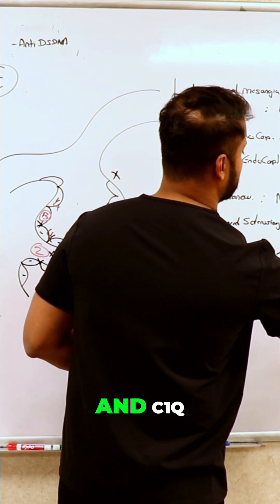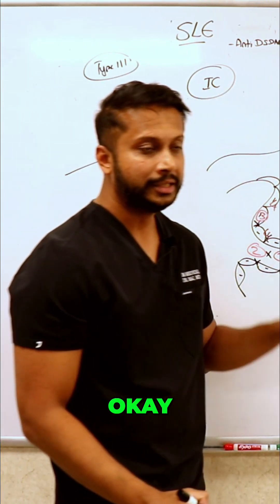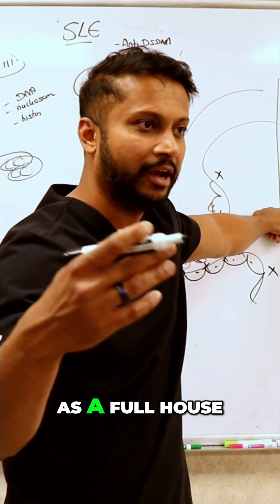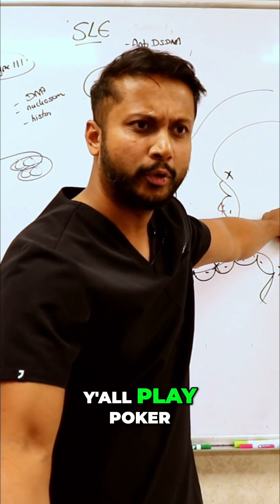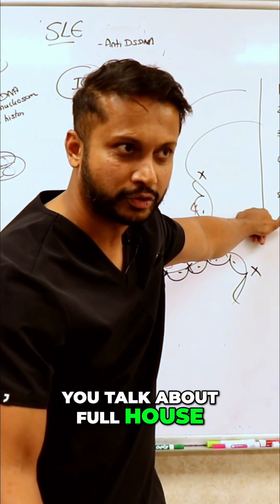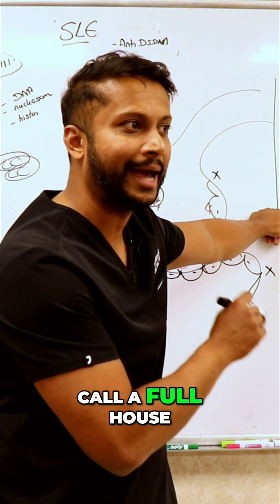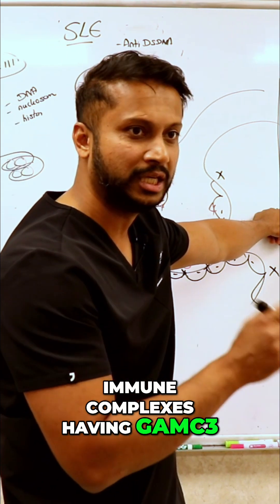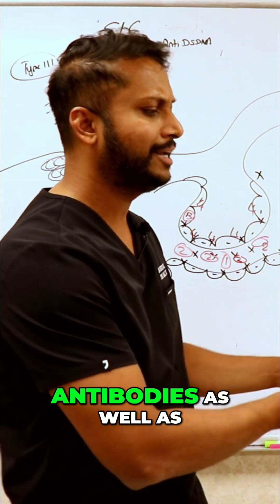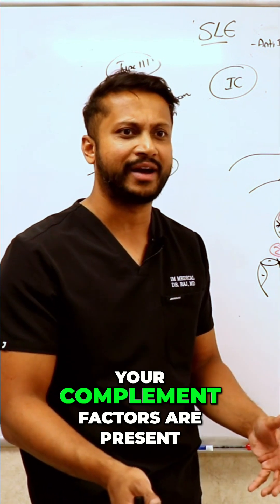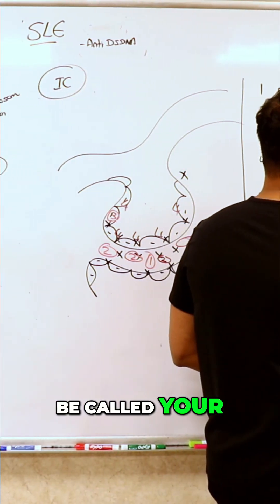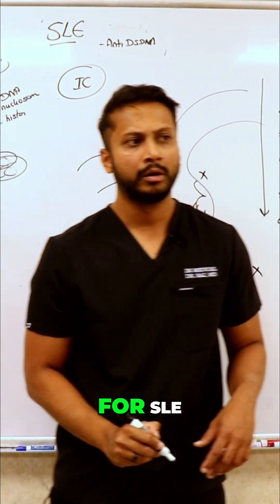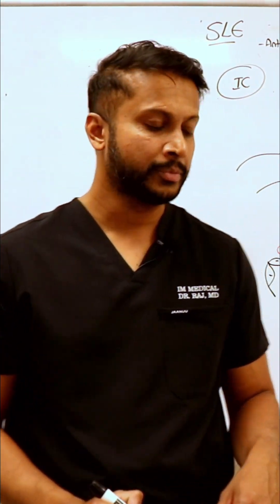IgG, A, M, C3, and C1q — this basically tells you that you have what we call a 'full house.' You play poker? You talk about full house, right? This is what we call a full house: presence of antibodies and immune complexes having IgG, A, M, C3, and C1q, meaning most of your antibodies as well as your complement factors are present. This full house presence is very unique for SLE.